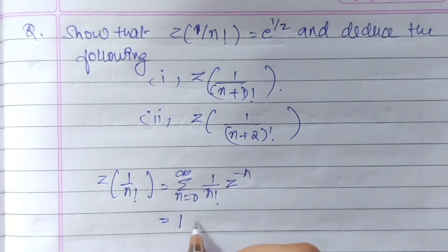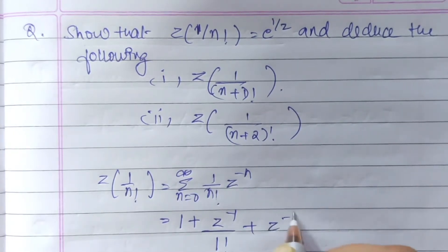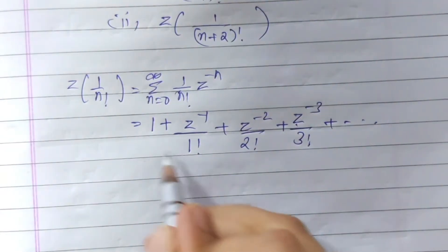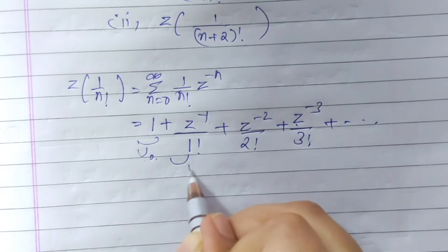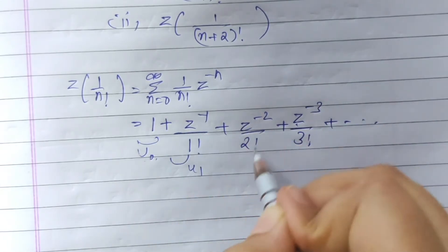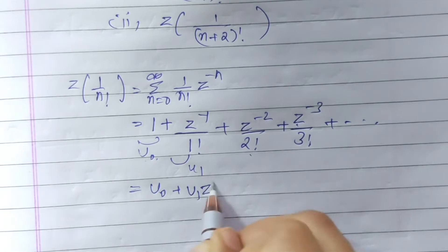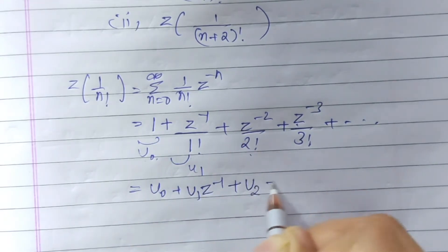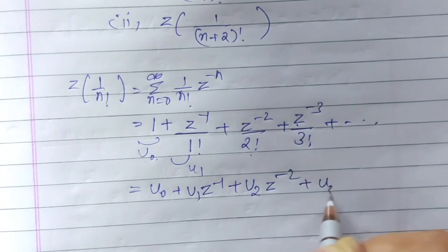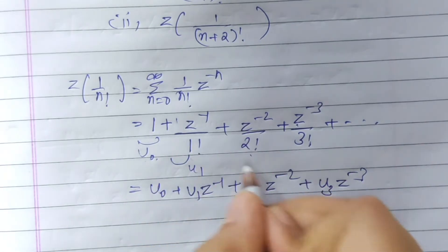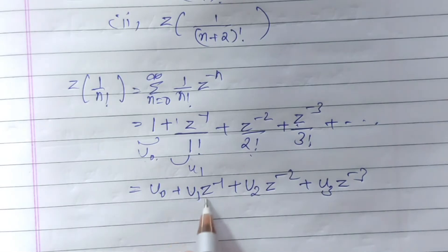On expanding, we get 1 plus z to the power minus 1 over 1 factorial, plus z to the power minus 2 over 2 factorial, plus z to the power minus 3 over 3 factorial, and so on. This term is u0, this term is u1, this is u2, u3, and so on. So it will be like u0 plus u1 z to the power minus 1 plus u2 z to the power minus 2 plus u3 z to the power minus 3.